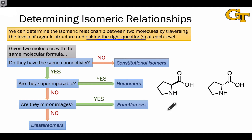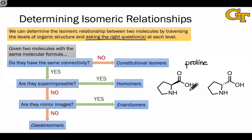Let's apply this line of questioning to determine the isomeric relationship between two isomers of the amino acid proline. It's easy to verify that these two molecules have the same molecular formula. Do the molecules have the same connectivity? They do — they both consist of five-membered rings with one nitrogen, and at a carbon adjacent to that nitrogen, there is a carboxylic acid functional group and an implied hydrogen. This means they're not constitutional isomers; they have the same connectivity.